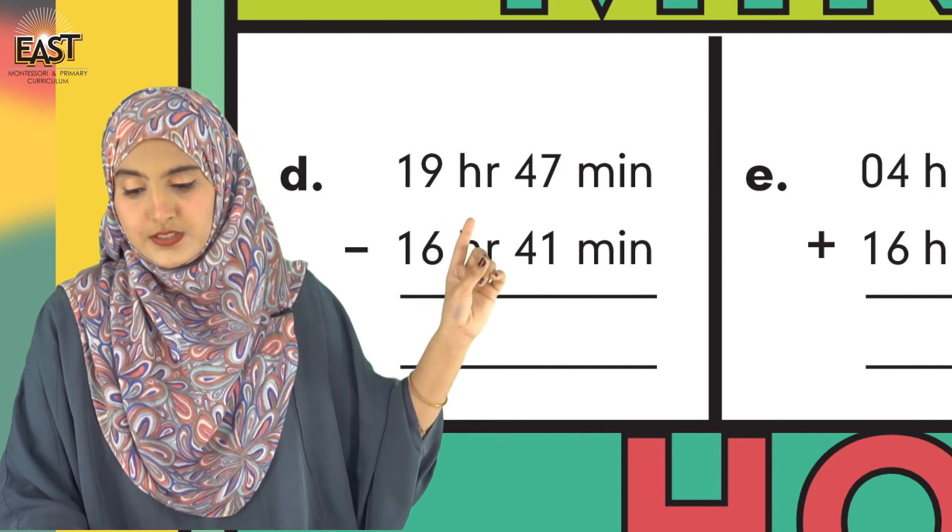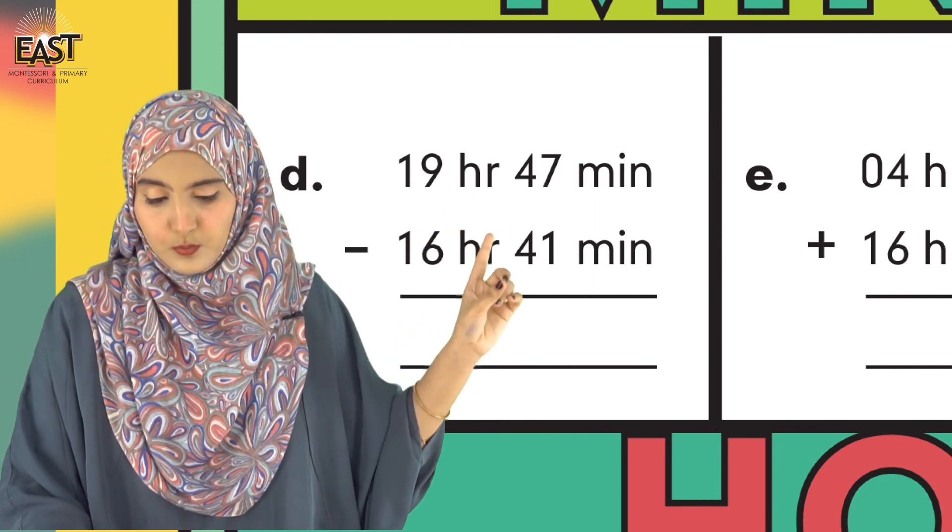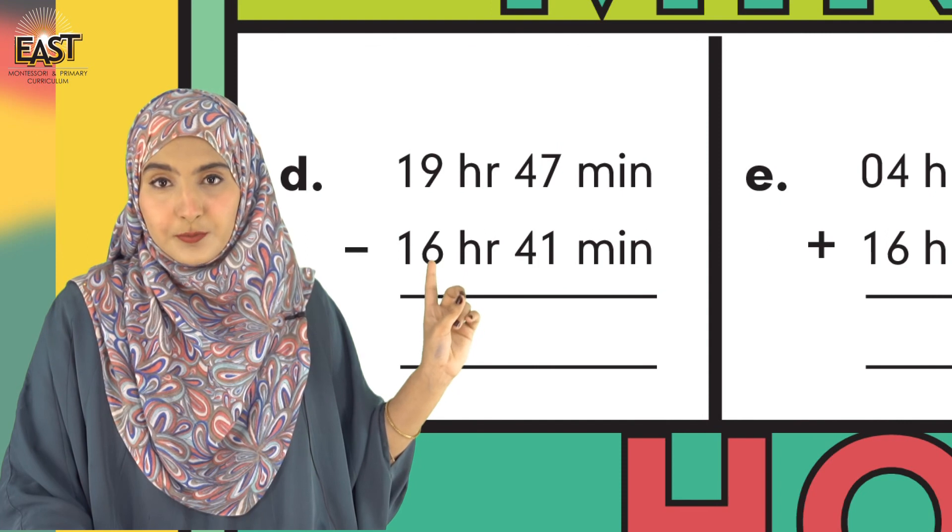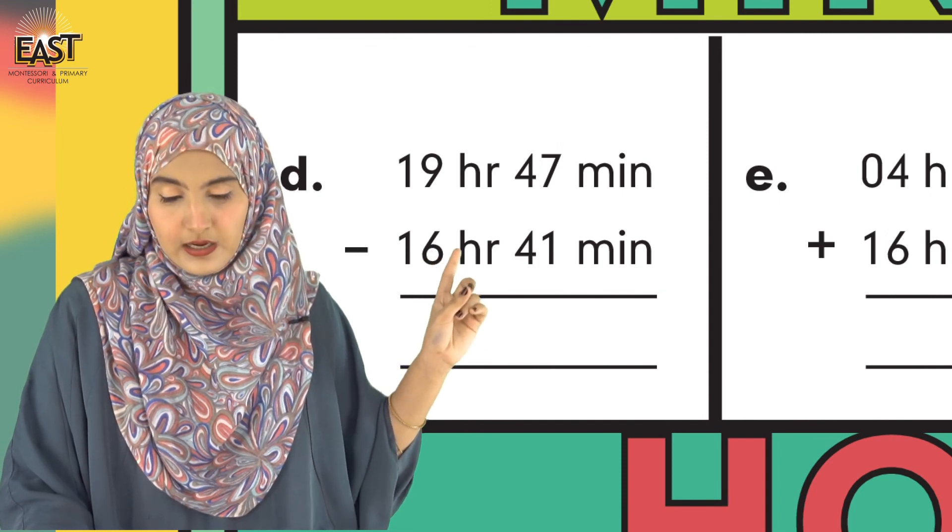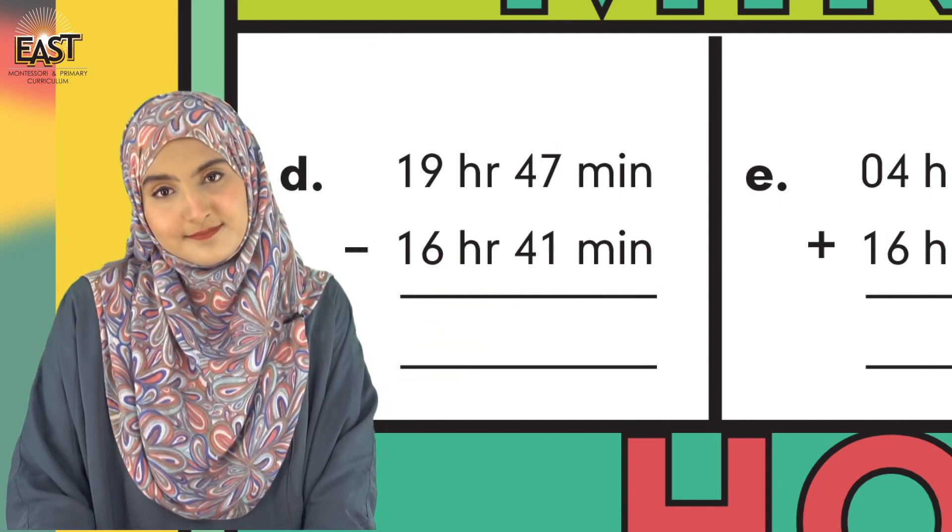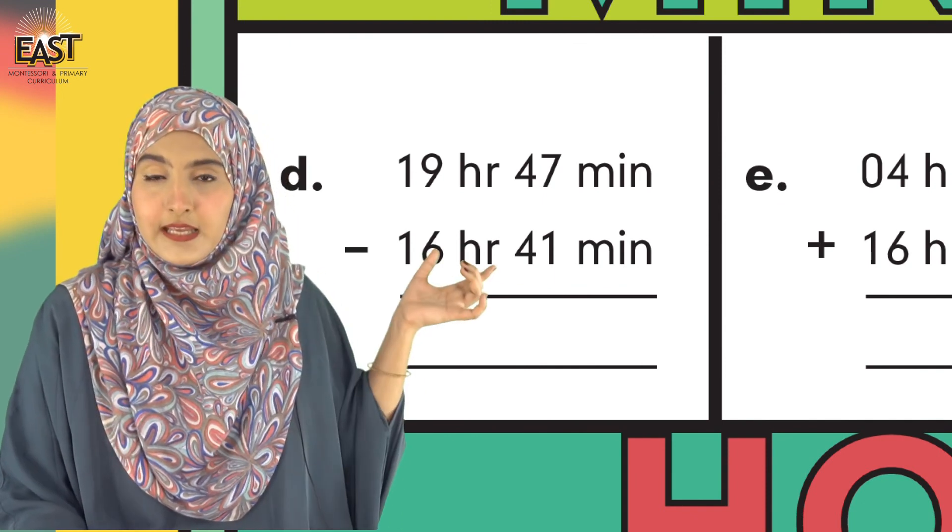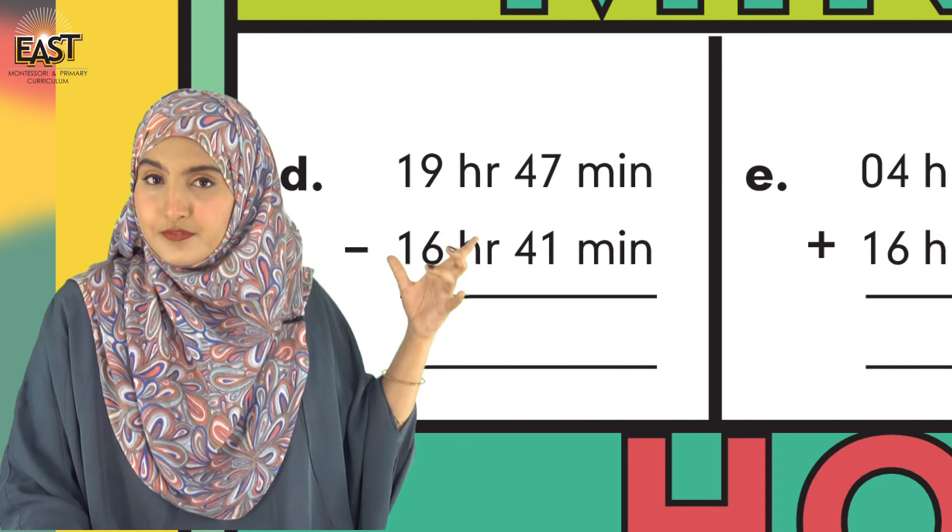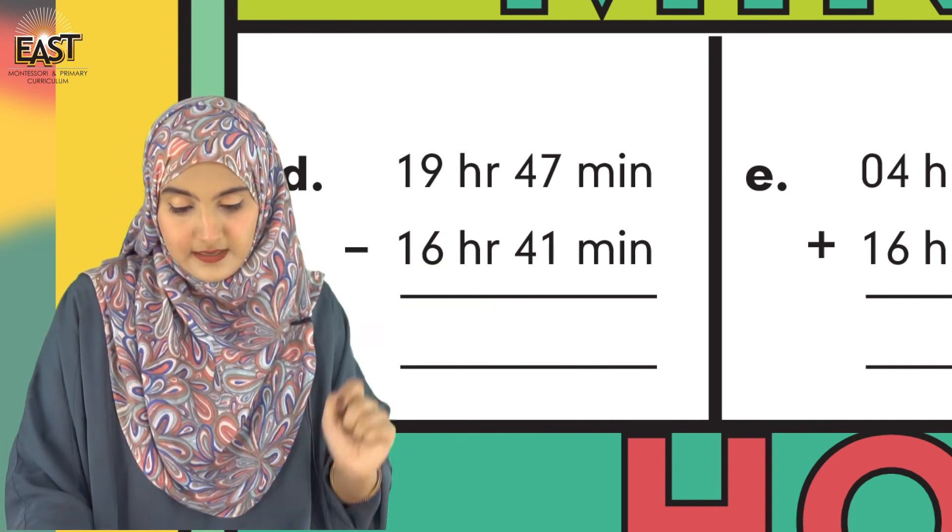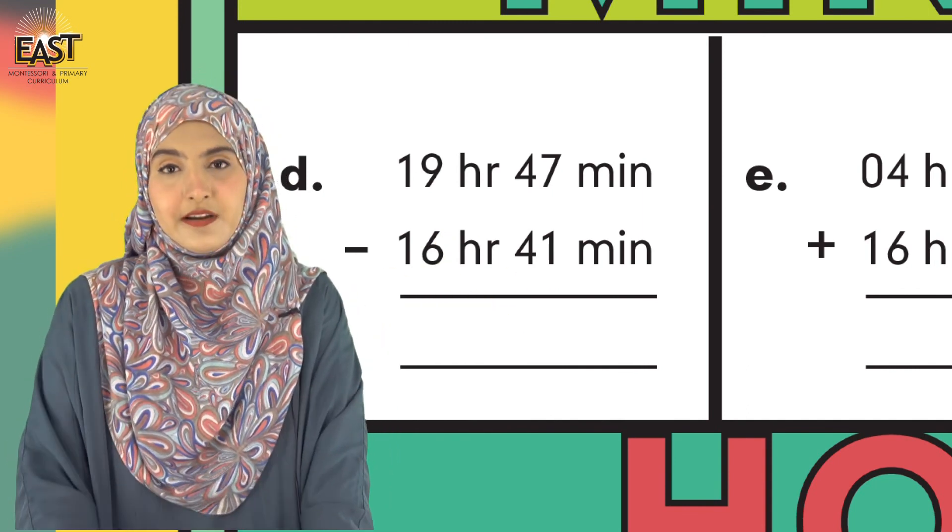19 subtracted from 16 and 47 subtracted from 41: the answer would be 3 hr and 6 min. This time would be the digital time of a digital clock. This is how we mention it.